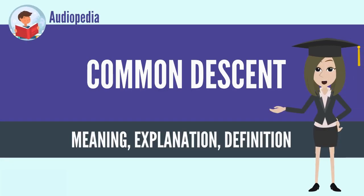Common Descent describes how, in evolutionary biology, a group of organisms share the most recent common ancestor. There is massive evidence of common descent of all life on Earth from the last universal common ancestor, LUCA. In July 2016, scientists reported identifying a set of 355 genes from LUCA by comparing the genomes of the three domains of life: archaea, bacteria, and eukaryotes.